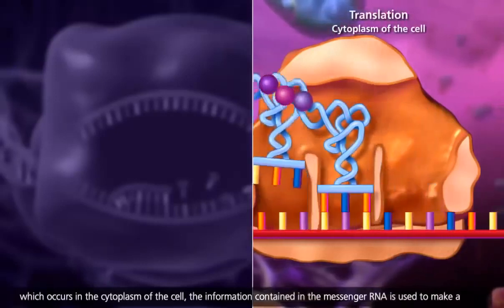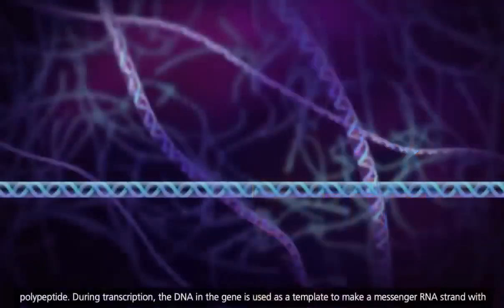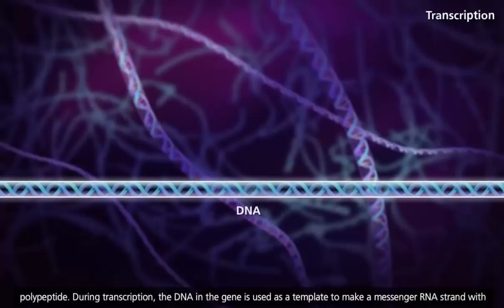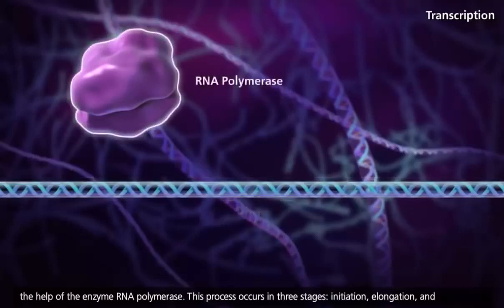the information contained in the messenger RNA is used to make a polypeptide. During transcription, the DNA in the gene is used as a template to make a messenger RNA strand with the help of the enzyme RNA polymerase.